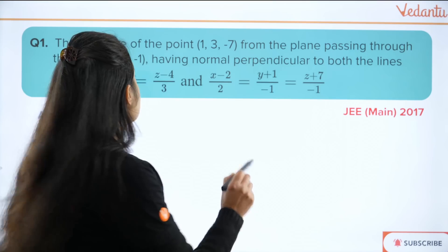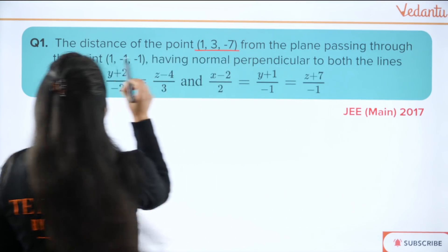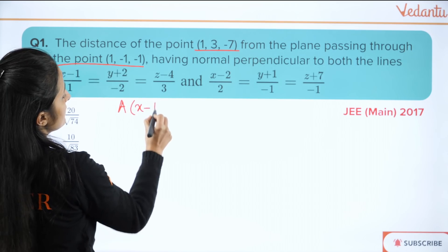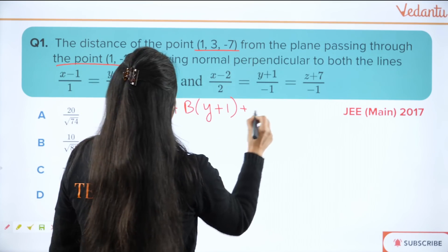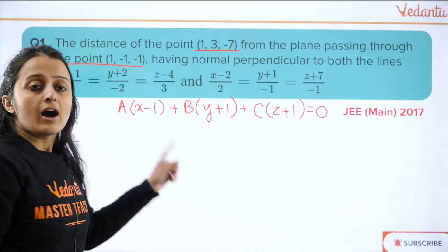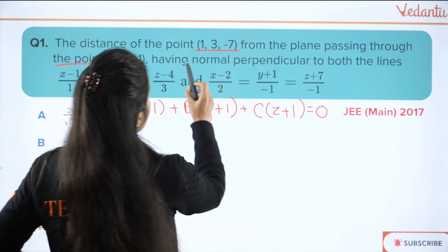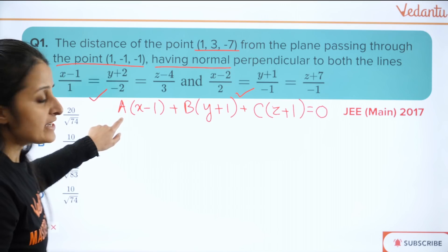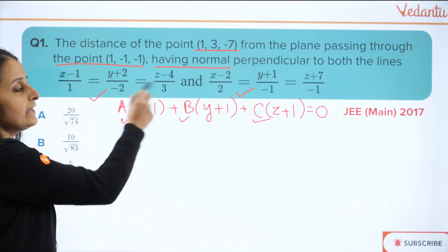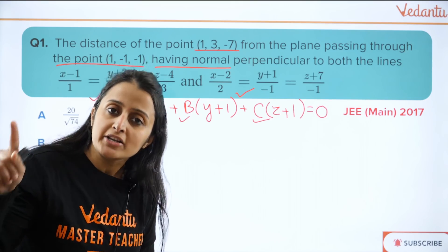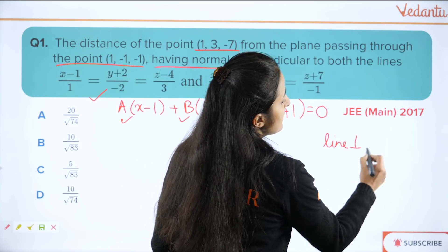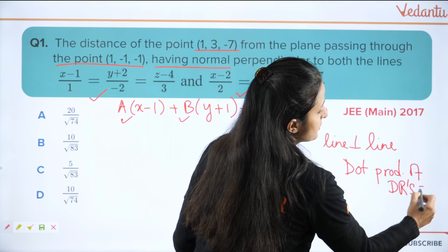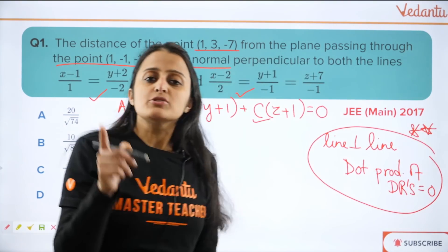The question says: find the distance of the point from the plane passing through this point. So there is a plane passing through this point. Now, I have been given that the normal is perpendicular to both the lines — so the concept of line perpendicular to a line is being used. Line perpendicular to line means the dot product of the direction ratios is equal to zero. Just watch this video till the end, because you will know where little mistakes can create big mistakes.